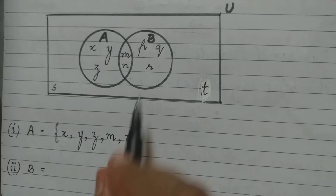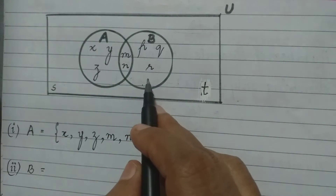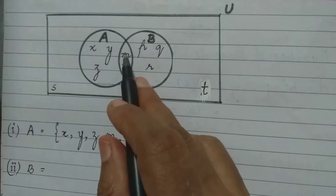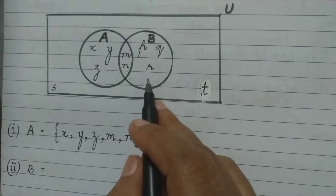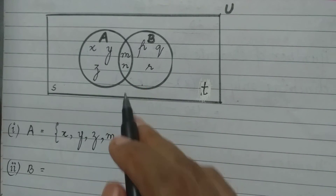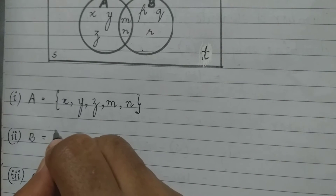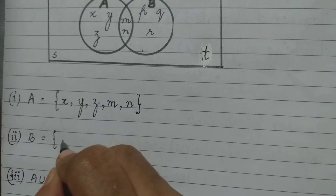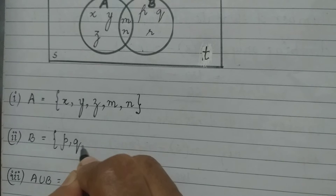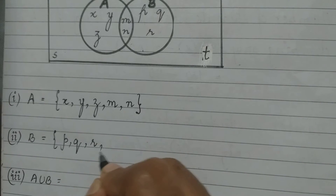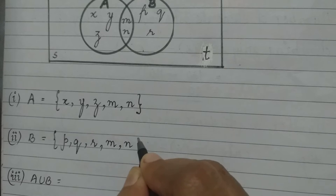Then I have to write set B. So it will be the elements P, Q, R, and also M and N which are common to both A and B. So set B will consist of the elements P, Q, R, M, and N.